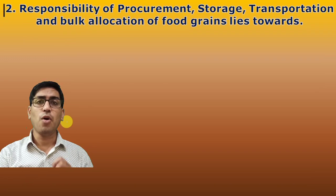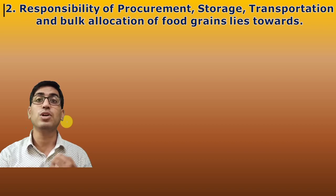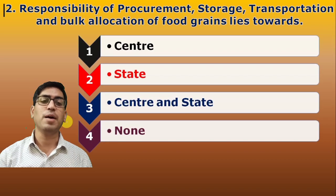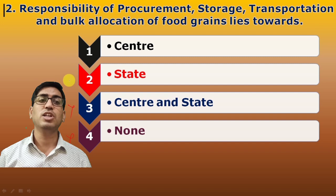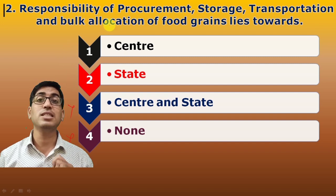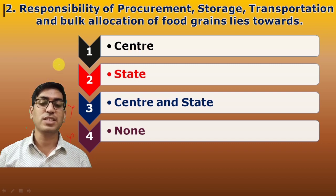Second question: Responsibility of procurement, storage, transportation, and bulk allocation of food grains lies towards whom — Center or State? The answer is Center. When we talk about procurement of grains, it refers to FCI procurement or different national agencies. So that is the role of the Center.